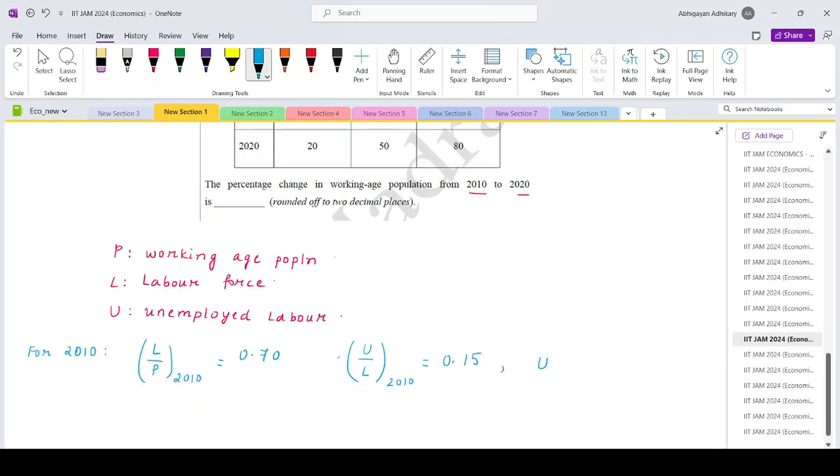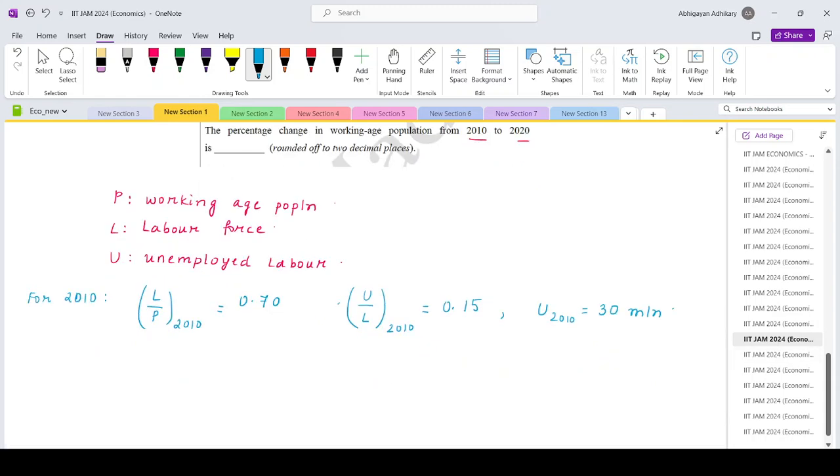And the total unemployed in 2010 is 30 million. So using this information, what is the total labor force? That is the total unemployed divided by 0.15, so that is 200 million.